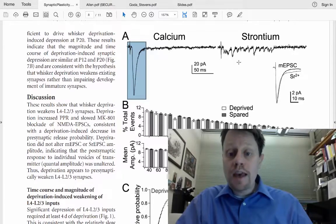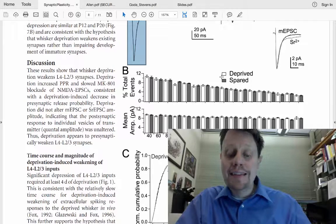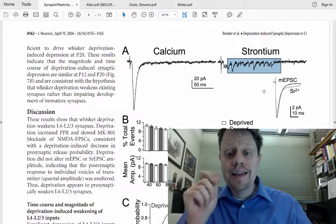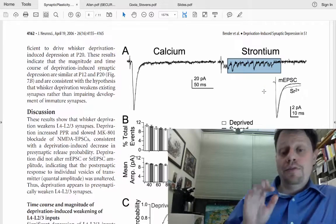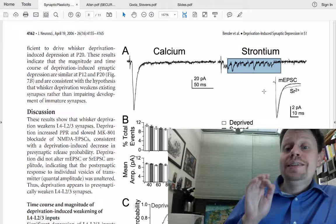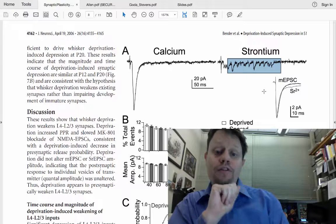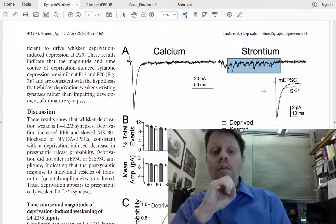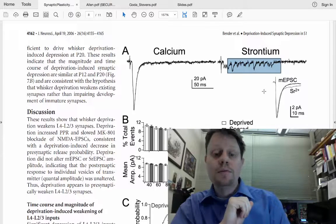What this allows them to do then is to compare between animals that have been through sensory deprivation versus animals that have not been through sensory deprivation and see whether there is a change in these individual postsynaptic one synapse at a time amplitudes. If the long-term depression is caused by a decrease in the number of AMPA receptors, then they should see smaller events in the deprived animals. However, if the long-term depression is caused by a decrease in presynaptic release, then these individual synaptic responses should be indistinguishable in their spared animals versus the deprived animals.